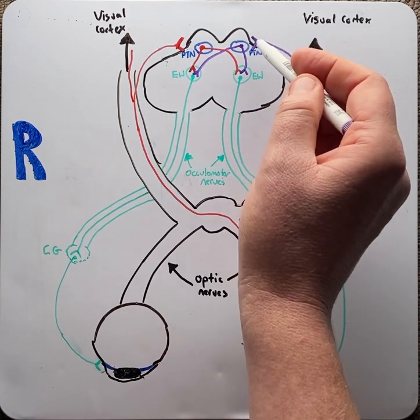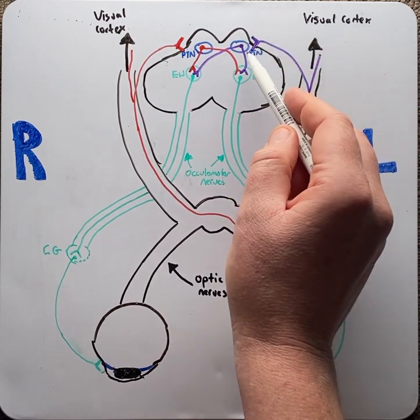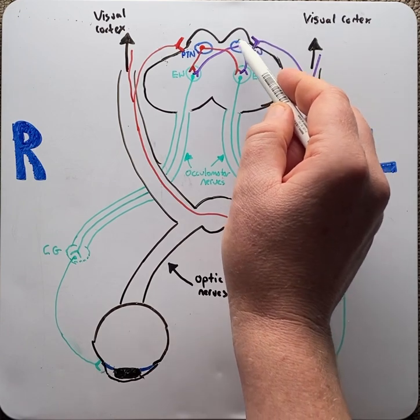But some of this information will be sent to the midbrain, the superior colliculus, specifically the pre-tectal nucleus, where it will synapse.